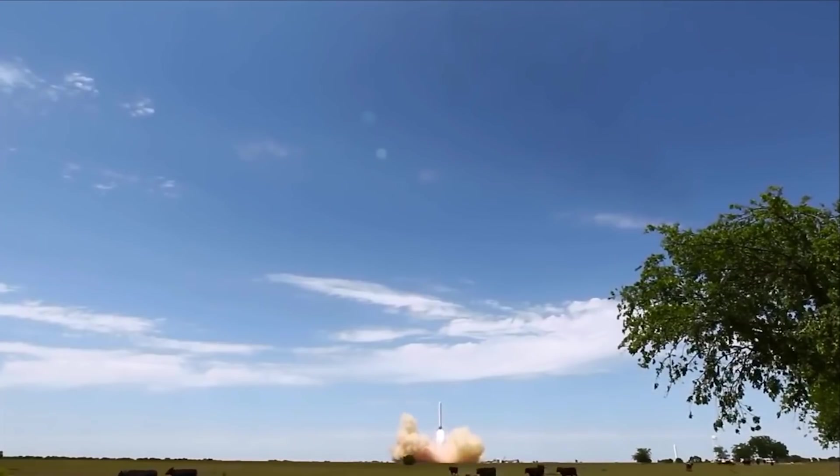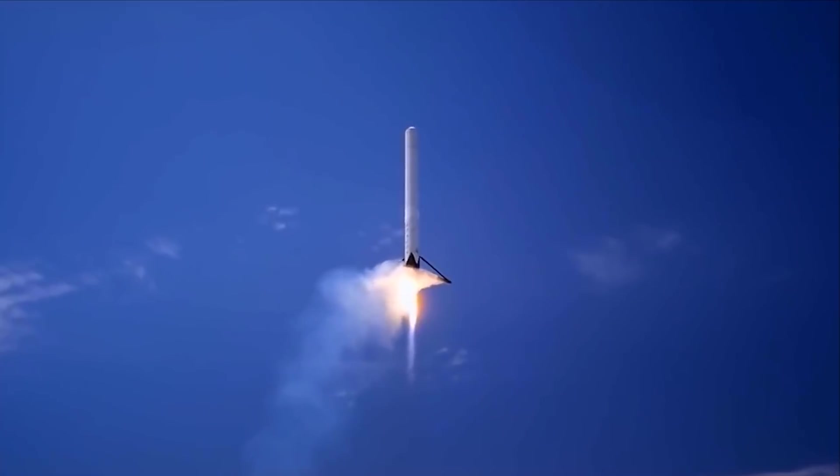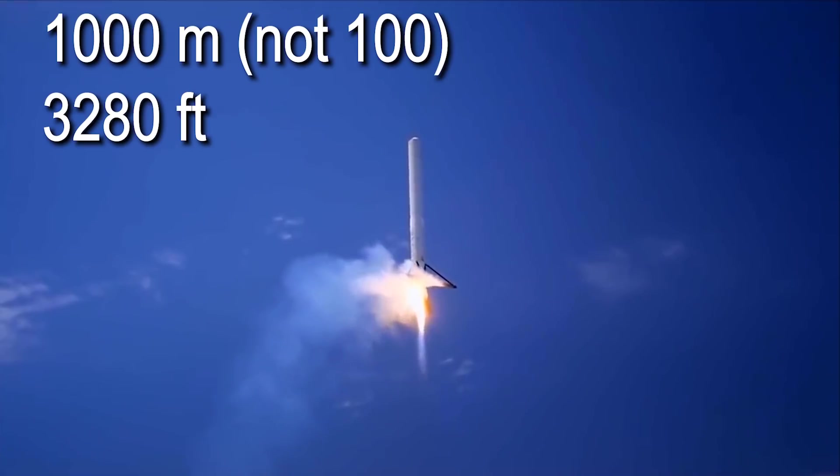Now, to move back to the Grasshopper rocket. On May 1st, it would do the exact same thing that it did previously. Instead, it reached a maximum altitude of 100 meters.